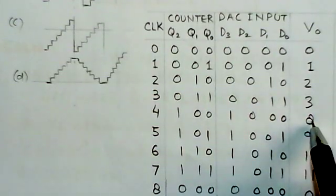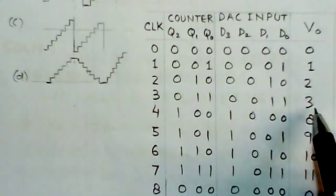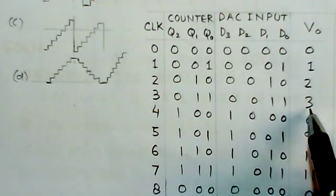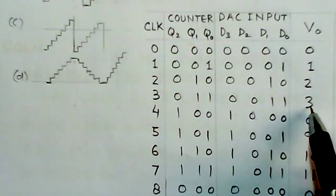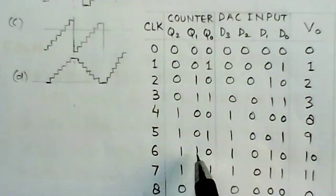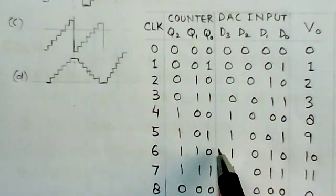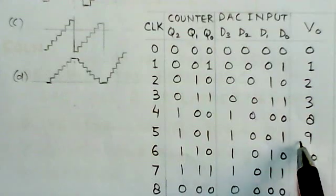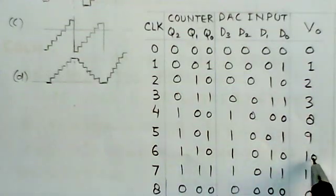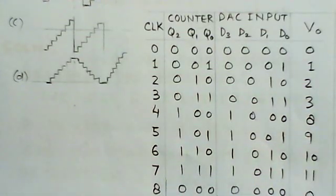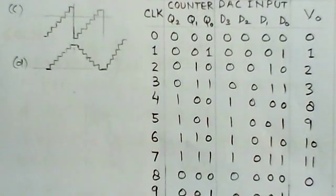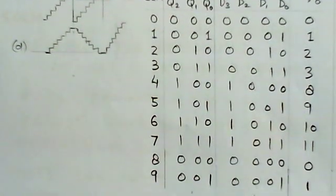These output values like 4, 5, 6, 7, they are not present here. Similarly, if you go further for 5th pulse: 1, 0, 1, this will be 1, 0, 0, 1, it will be 9, then 10, 11.